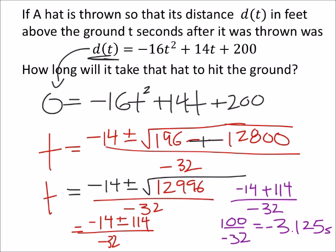Problem with this answer right here is we've got a negative seconds, which would mean that the hat would be above the ground at negative 3.125 seconds before you threw it, which means that's, I don't know how you find that, that kind of is an imaginary value.